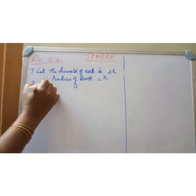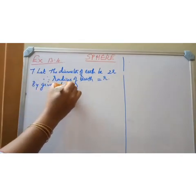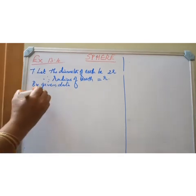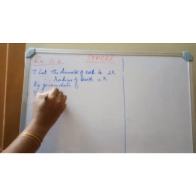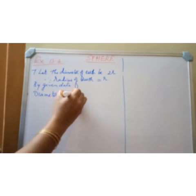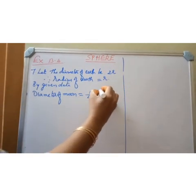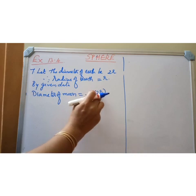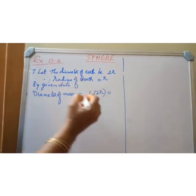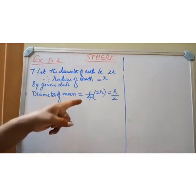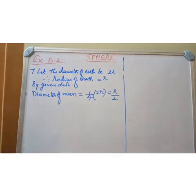By the given data, the diameter of the moon is equal to one-fourth of the diameter of the earth. The diameter of the earth is 2R. So, one-fourth of 2R: the 2 and 4 cancel, giving R divided by 2. So the diameter of the moon is equal to R by 2.